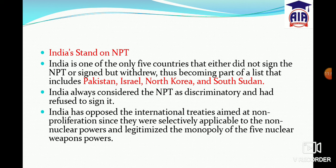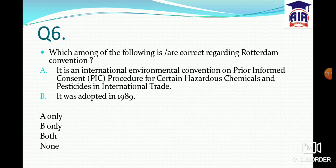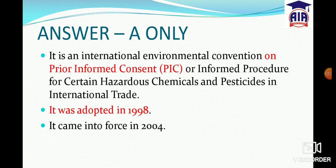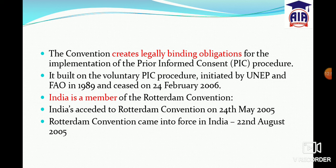Next question about the Rotterdam Convention: It is an international environmental convention on prior informed consent procedure for certain hazardous chemicals and pesticides in international trade. The answer is A only — the first statement is correct. It was adopted in 1998, and it legally creates binding obligations on parties.